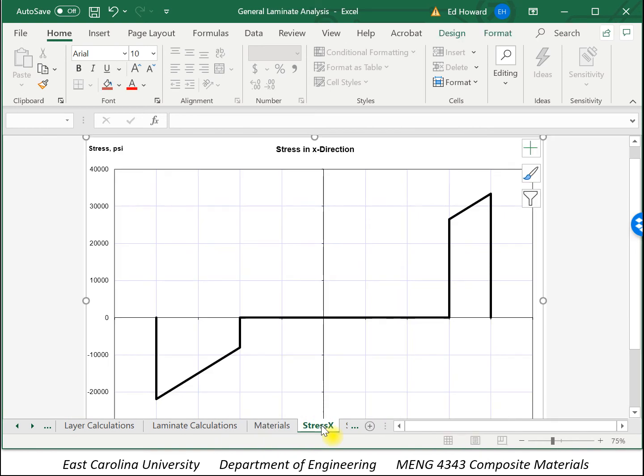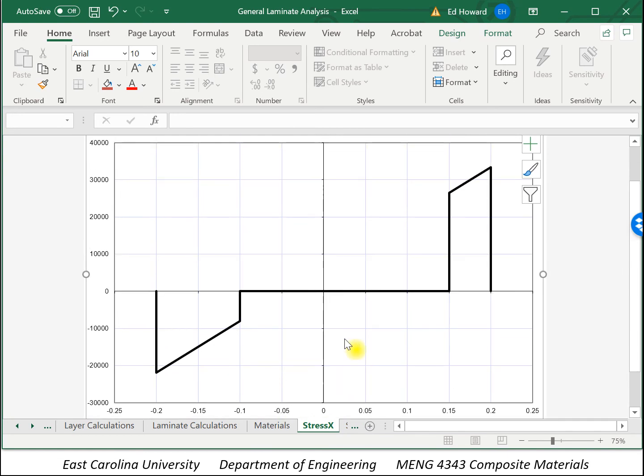And here we plotted the stress in the x direction as a function of the distance below the mid-plane. So here you can see the carbon epoxy skins, of course, have much higher stress. And the foam core has essentially a zero stress.